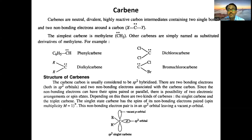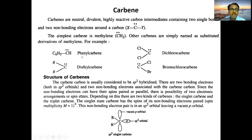So we have two types: singlet carbene, when both electrons have opposite spin, and triplet carbene, when both electrons have the same spin — and since they have the same spin, they must be present in different orbitals. Regarding nomenclature, the simplest is methylene carbene. If hydrogen is substituted by a phenyl group, it is phenyl carbene. If substituted by two chlorine atoms, it is dichlorocarbene. Two alkyl groups gives dialkylcarbene, and different halogens gives bromochlorocarbene.